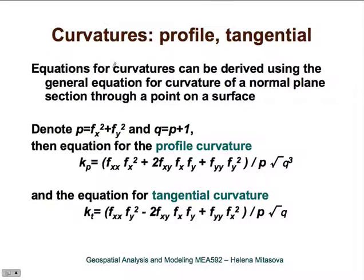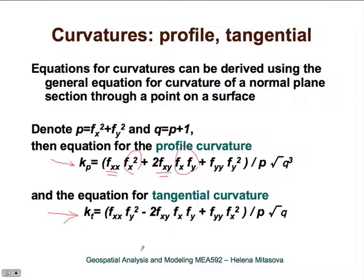Equations for curvatures can be derived from the general equation for curvature of a normal plane section through a point on a surface. The key point to remember is that curvatures—because they represent change in slope and change in aspect—are functions of both first-order and second-order partial derivatives. We need a function with defined first and second order derivatives to compute the curvatures.